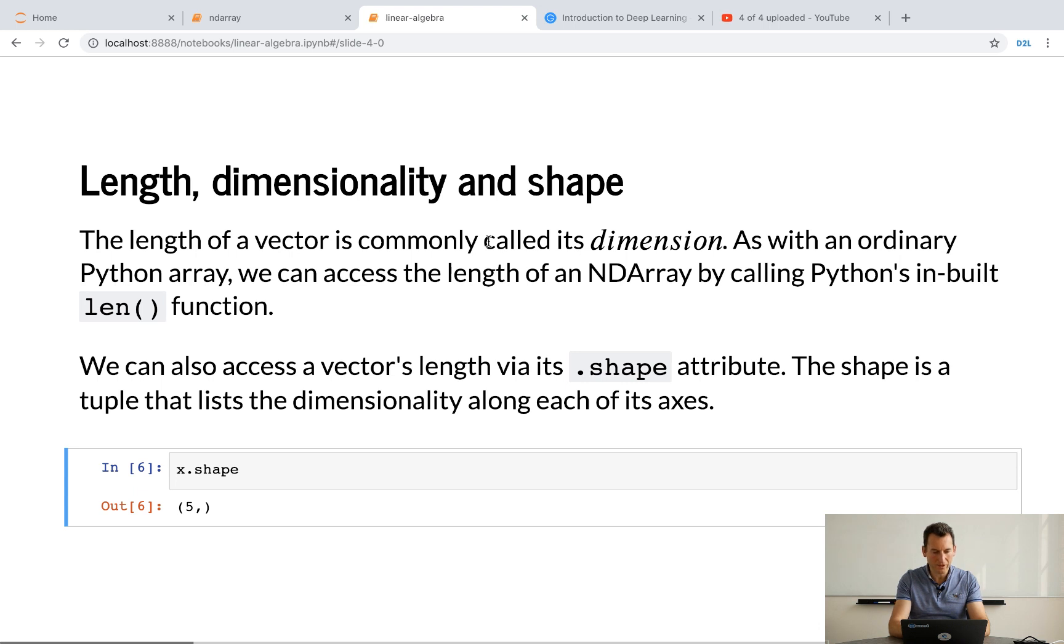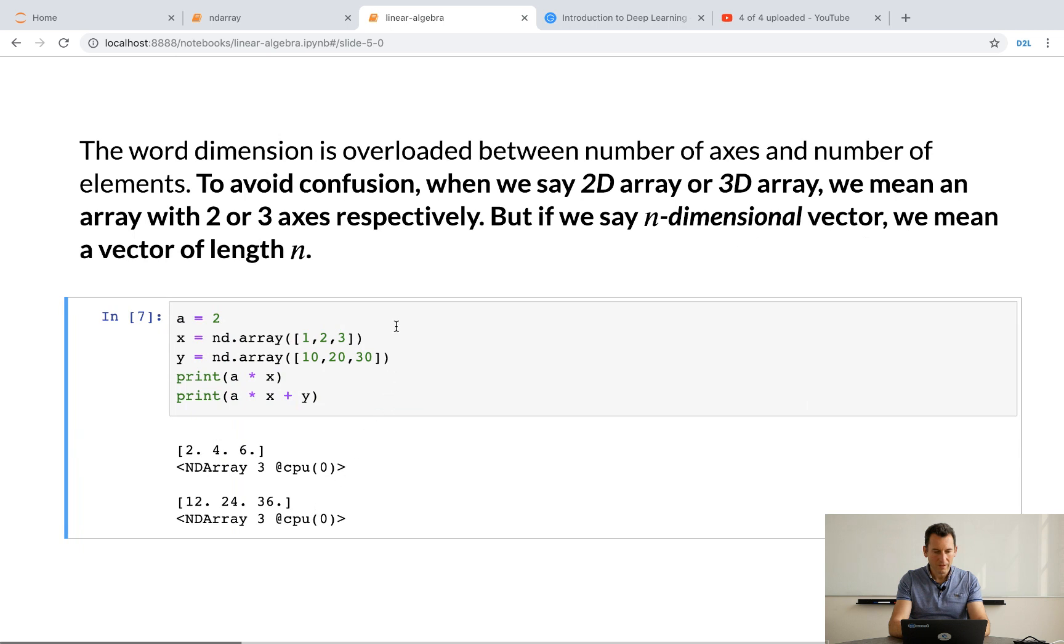So, if I call x shape, it'll just tell me the shape. In this case, it's a vector with one dimension. And there are five entries here.